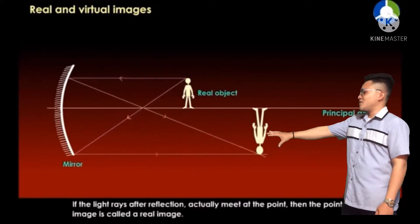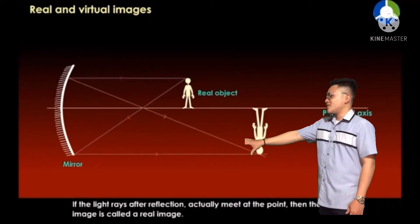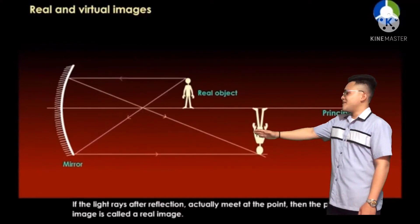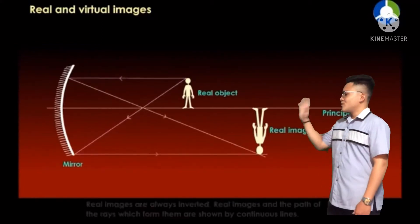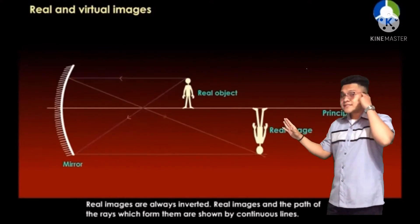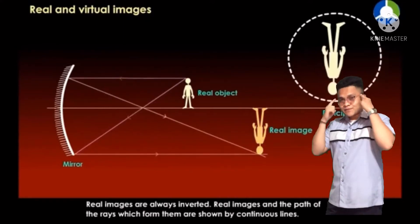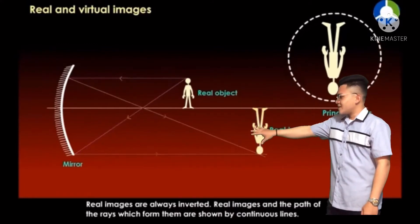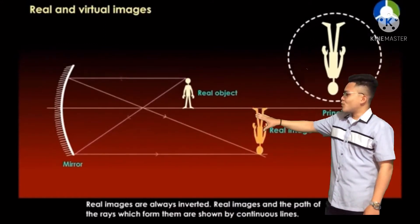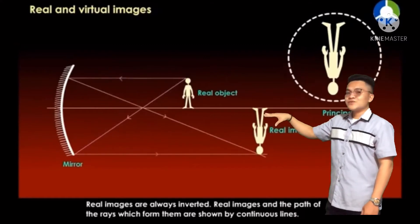If the light after reflection actually meets at any point, then the point image is called a real image. Real images are always inverted. Keep that in your mind. Real images and the path of rays which form them are shown in continuous lines.